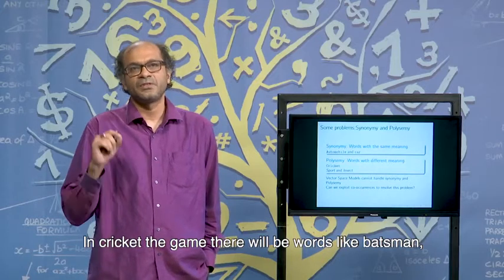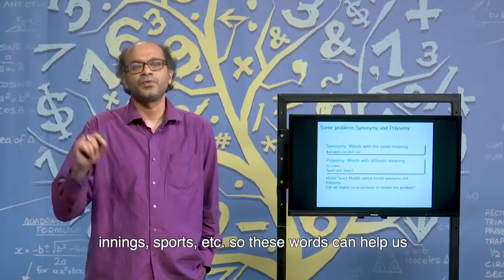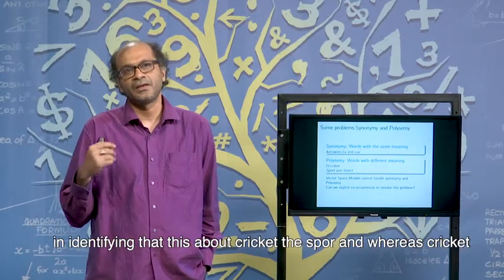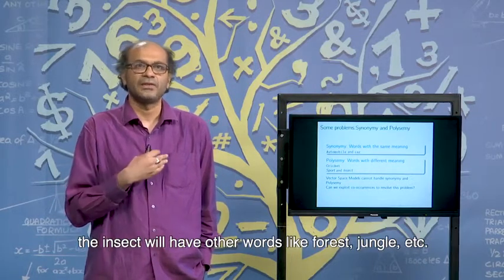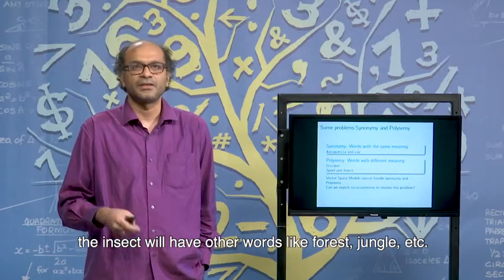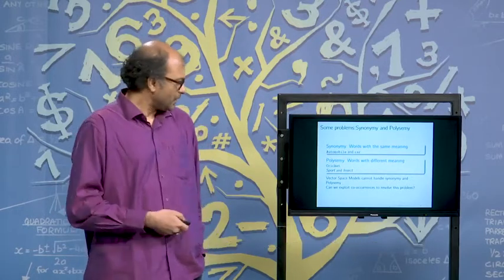In a cricket the game, there will be words like batsman, innings, sports, etcetera. This word can help us in identifying that this is about cricket the sport, whereas in the insect we will have other words like forest, jungle, etcetera.